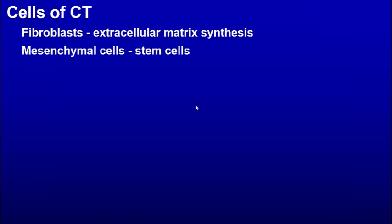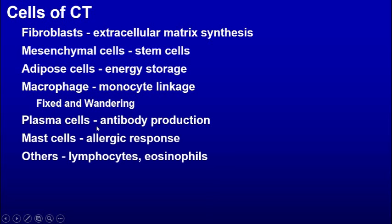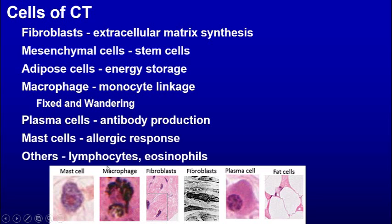Under different cells of connective tissue: the main cell is the fibroblast — also called fibrocyte — and it's the one that secretes the extracellular matrix. Then you have mesenchymal cells, which are stem cells. They look like fibroblasts and we can't tell the difference, but they're pluripotent — they can make a bunch of different cells. Adipose cells are for energy storage. Macrophages are part of the monocyte lineage, with fixed and wandering types. Plasma cells come from B lymphocytes and make antibodies. Mast cells are associated with the allergic response. Other cells include lymphocytes and eosinophils.